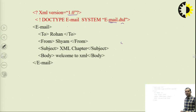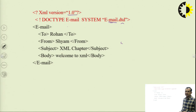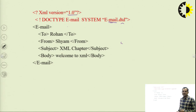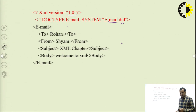That covers internal DTD. We use DTD for data validation. In the next lecture, we will discuss the second validation method — XML Schema, also known as XSD. Thank you.